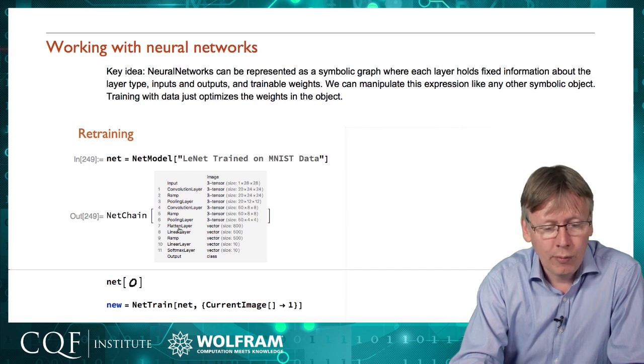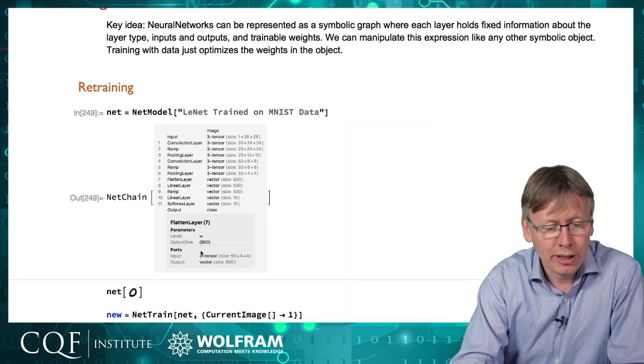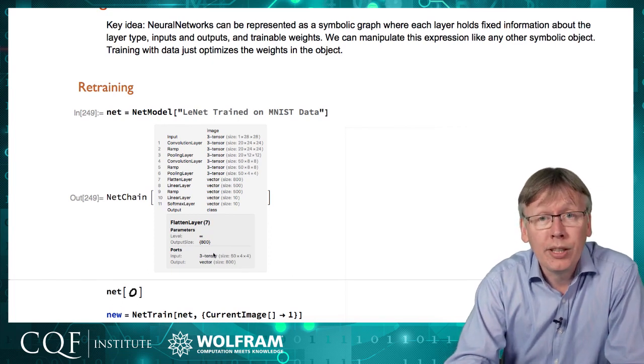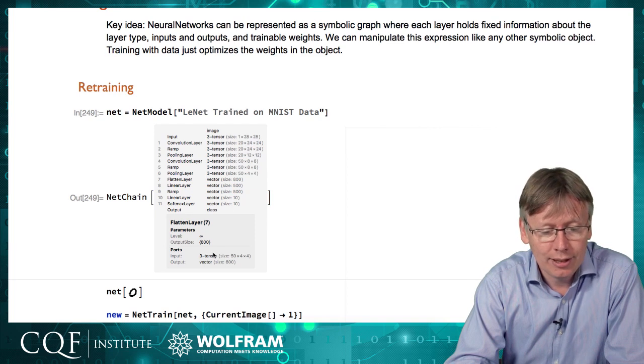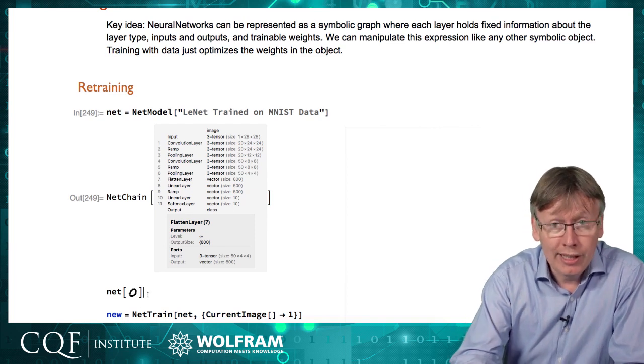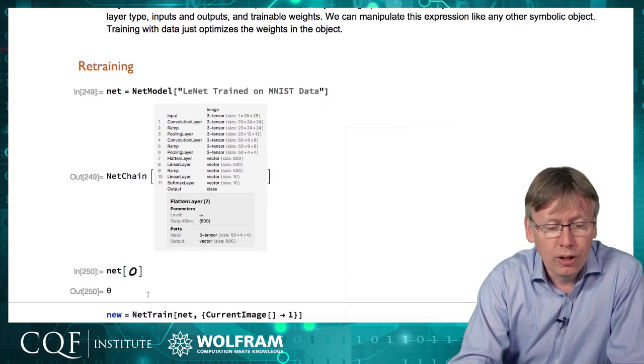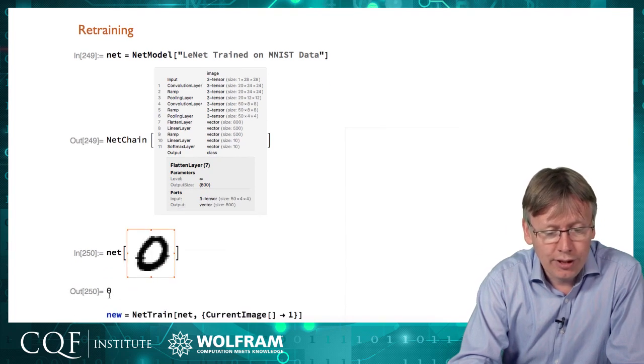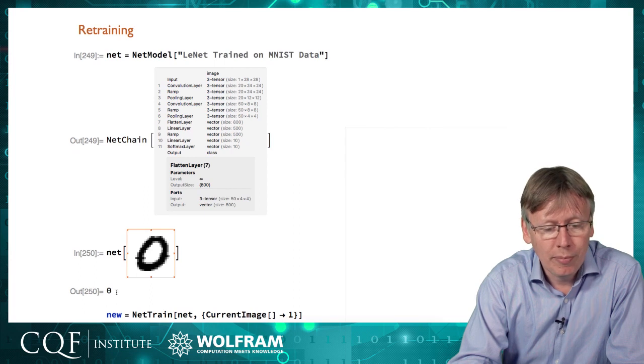And if we click on one of these layers, we can find out more information about the details of what it does and what its current settings are. And we can use that directly. It's already pre-trained this network on an image. This is a picture of a zero and then it's made a prediction that it's the character zero from that.